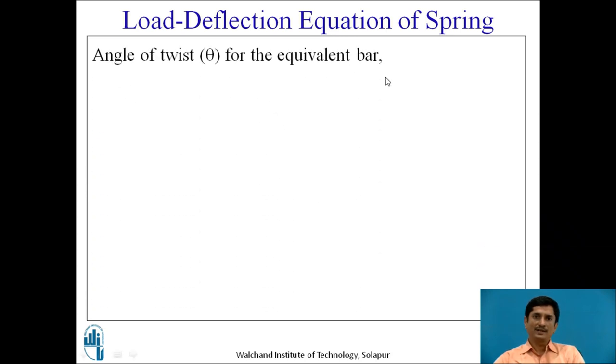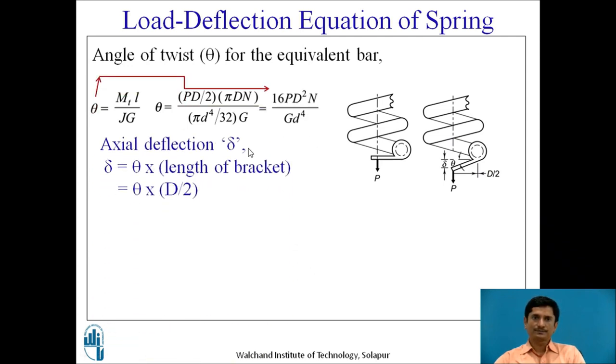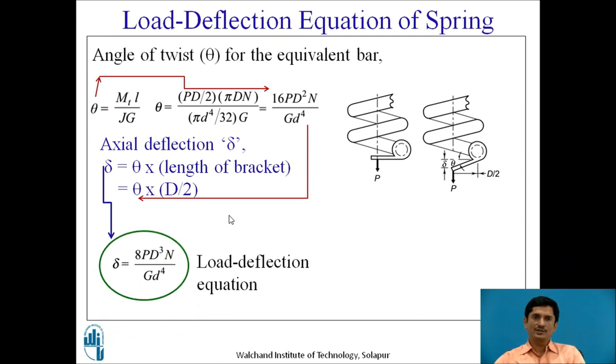Next equation is load deflection equation of the spring. Angle of twist theta at the end is the effect caused by the force P, but our interest is delta. We know this angle theta by the torsion equation. We can rewrite. Tau is PD by 2, l is pi DN, then J and G. The equation is simplified. Axial deflection which is equal to theta into D by 2. We can replace the value of theta. And then delta changes to delta equals 8P D cube N upon G d raised to 4. This is what is the load deflection equation.